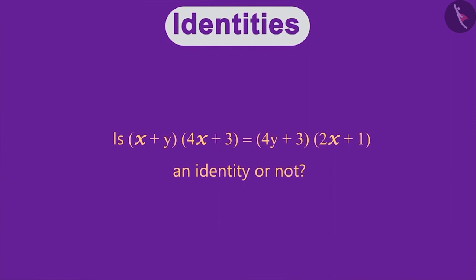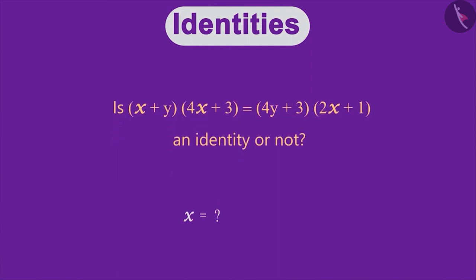Can you tell whether this equation is an identity or not? The easiest way to find it out is to try putting a number instead of x and y, for example.